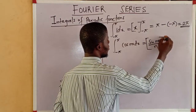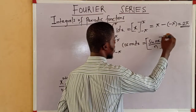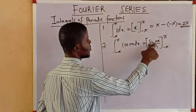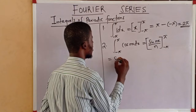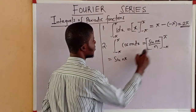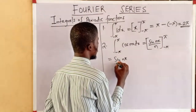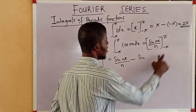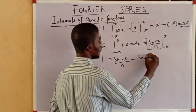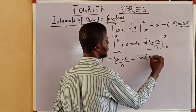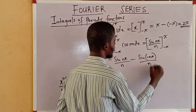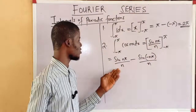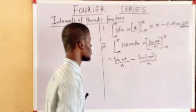The integration is from negative pi to pi. Plugging in pi for x, we have sine(nπ) all over n. Minus: plugging in minus pi gives minus sine(−nπ) all over n. Everything here will give us zero — let's see why.